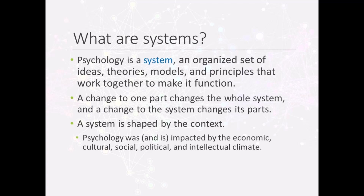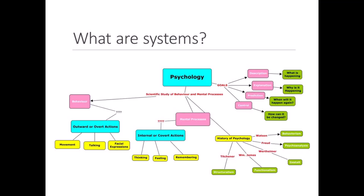Psychology is a product of the different systems that existed at various times in history. For example, the belief systems of ancient philosophers and early physiologists impacted the field's development. This figure depicts psychology as a system. The field's history is just one part of the system. It also includes the goals of psychology — to describe, explain, predict, and control — as well as the concepts that fit within it: human behavior and mental processes. We could add the subfields or subsystems of psychology to this illustration.